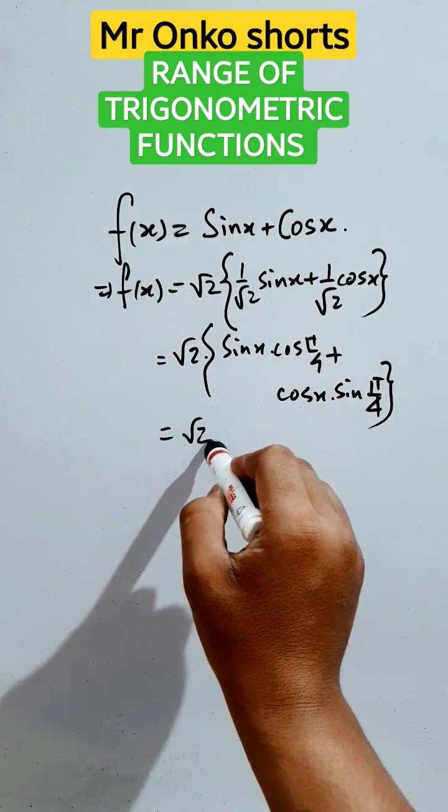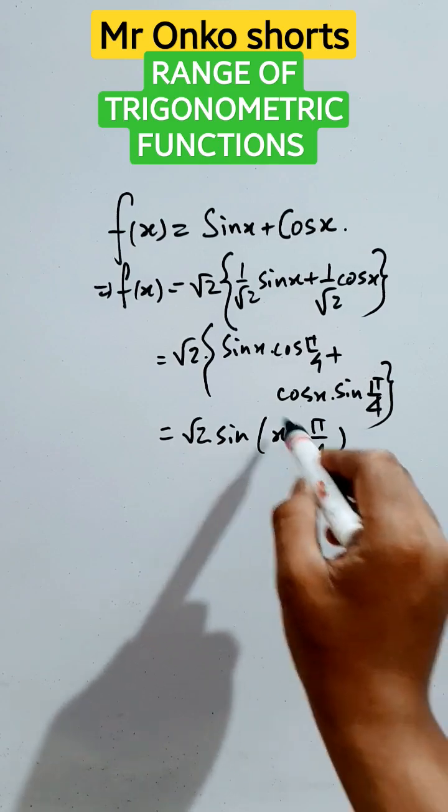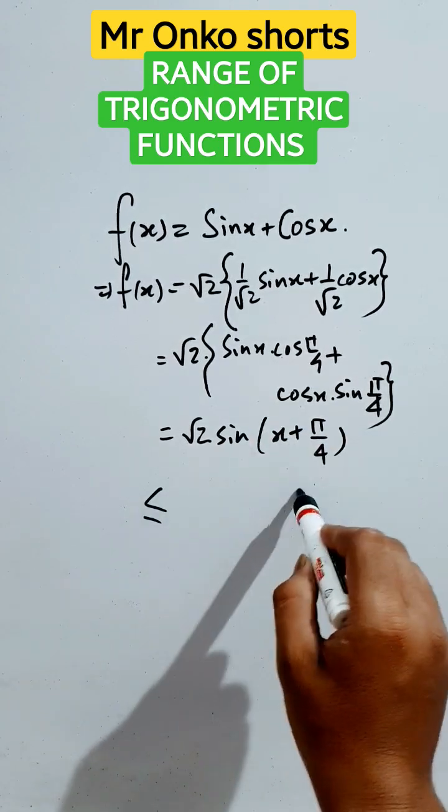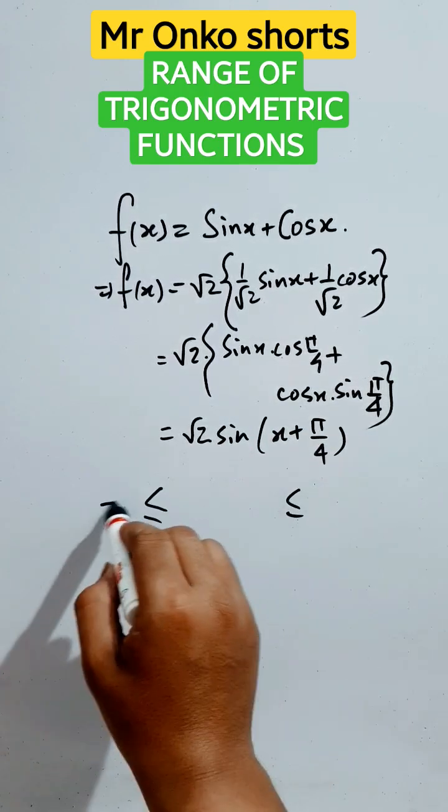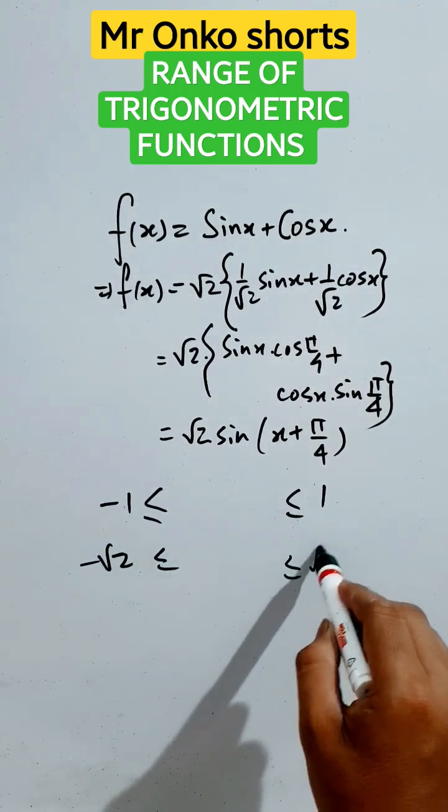Now it is root two into sine of x plus pi by four. So sine function is obviously greater than equals to minus one and less than one. So it is minus root two to positive root two.